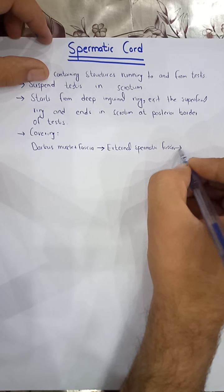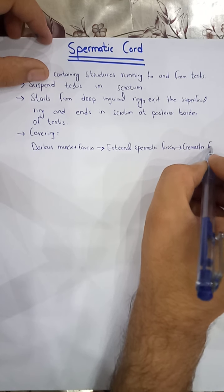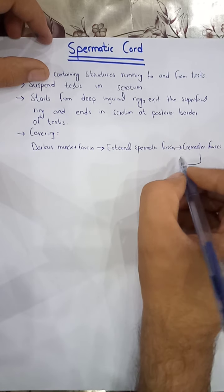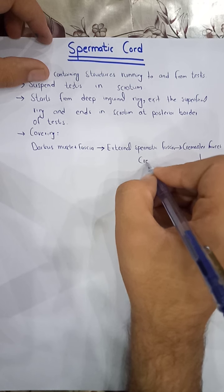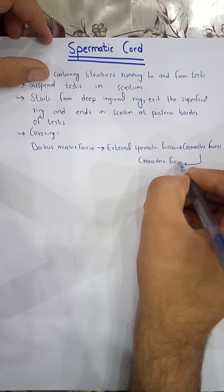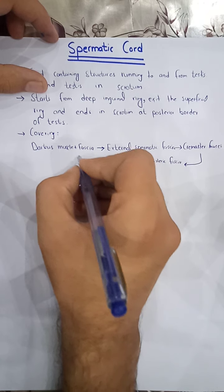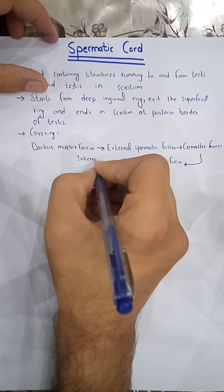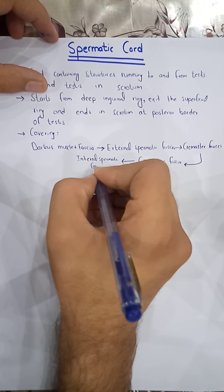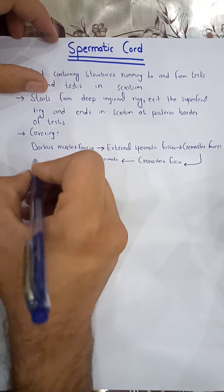After the external spermatic fascia, we will see the cremasteric muscle and cremasteric fascia. Inside the cremasteric fascia, we will see the internal spermatic fascia. And finally, we will see the processus vaginalis.